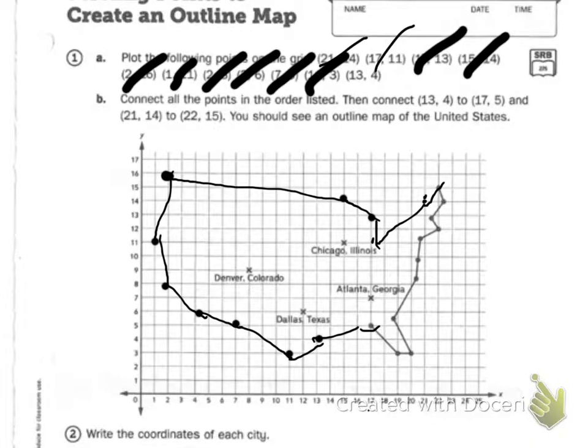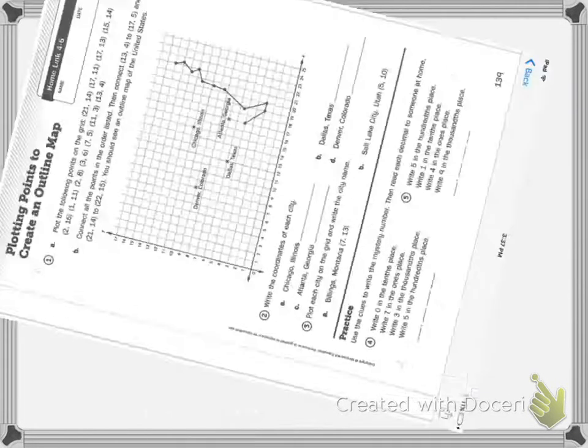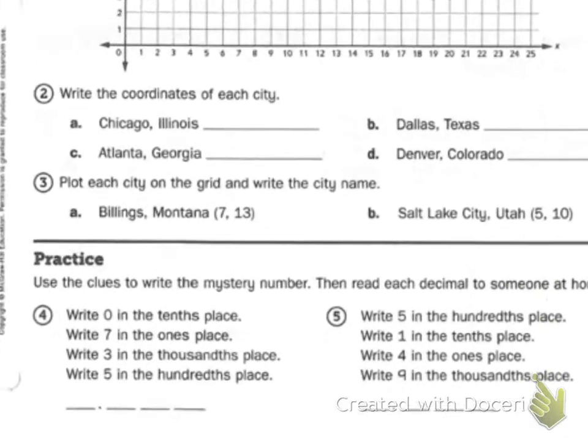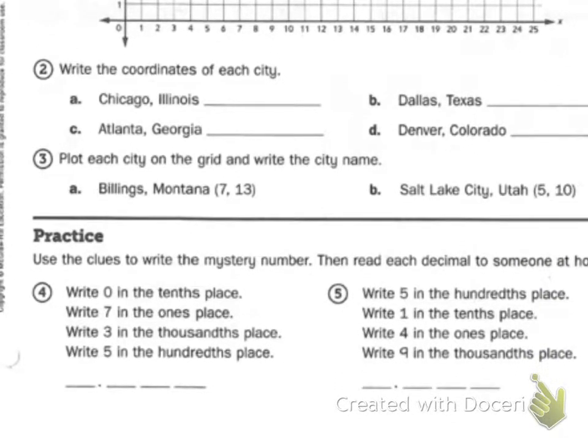Your map should look something like this. I'm going to flip to the next page and bring up the bottom part of it so we can go through that together. It says write the coordinates of each city. Chicago is starred there. You need to go all the way over. I counted to 15 and go all the way up to 11. And that should be Chicago. So, you should have this written like this: 15 and 11.